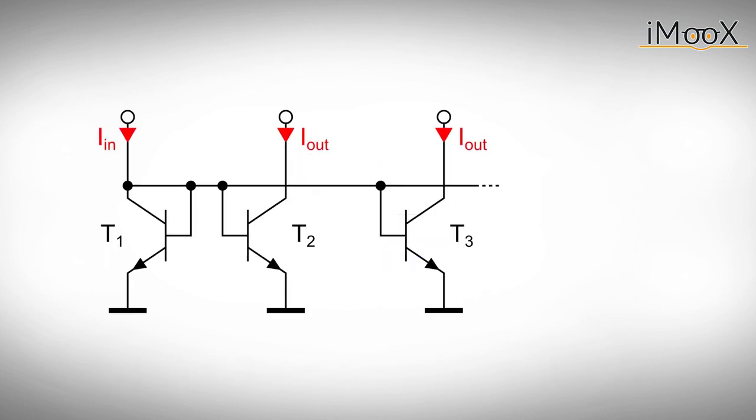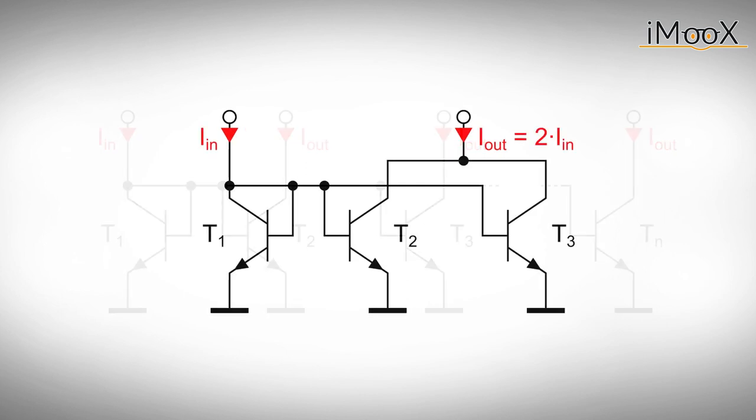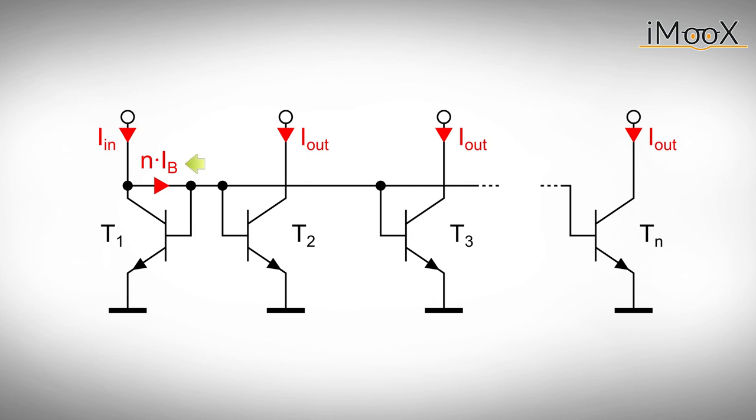But the circuit is not limited to create just one duplicate of the input current. You can add even more transistors to create a third or fourth current. And if you need a multiple of the input current, just connect two or more outputs together. But keep in mind that also the sum of base currents increases and comes closer to the input current. This affects the precision of your current mirror, so don't go crazy on the number of transistors.